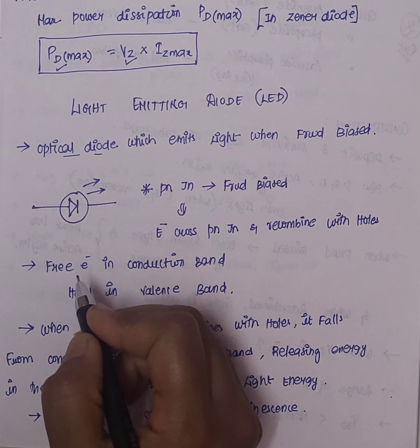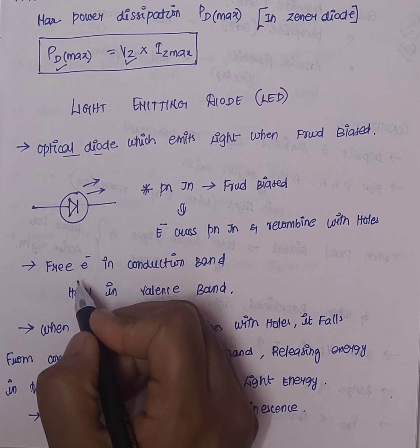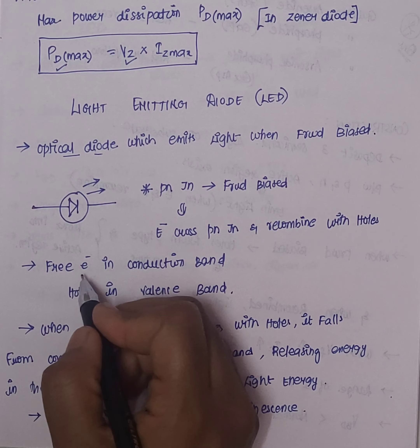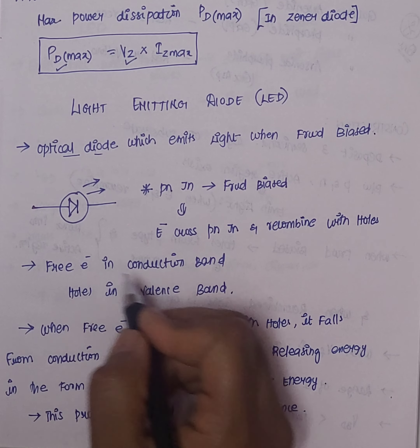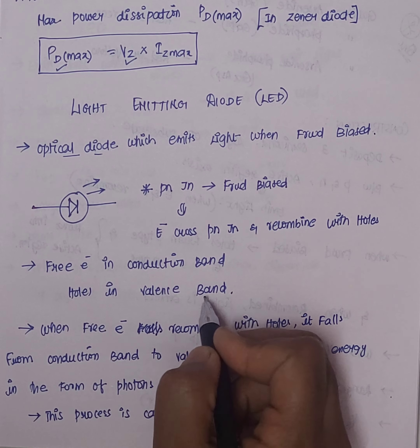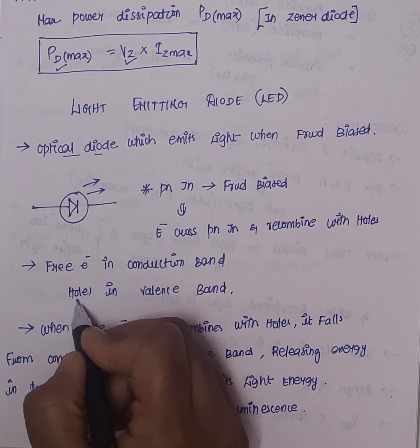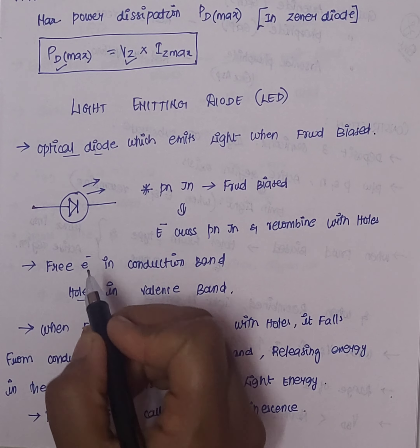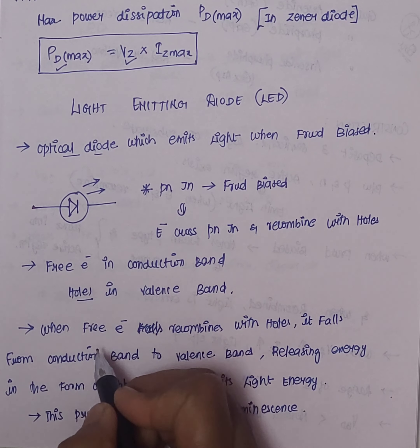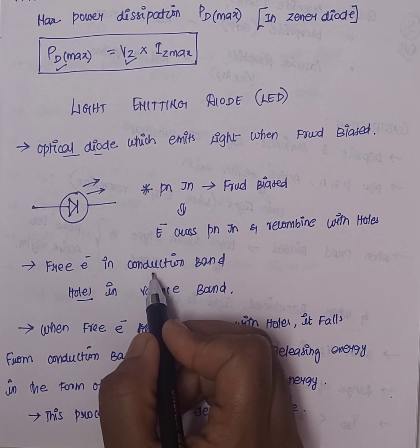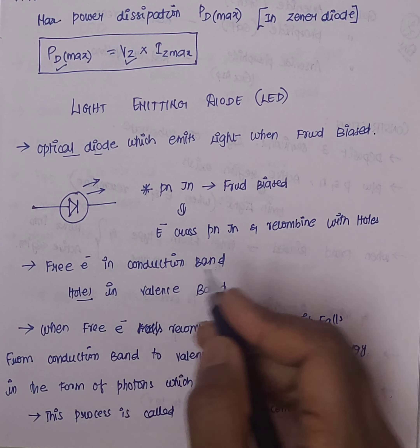The valence electrons will be converted into the valence band. In the valence band we have holes. If we look at the free electrons, they are combined in the holes.